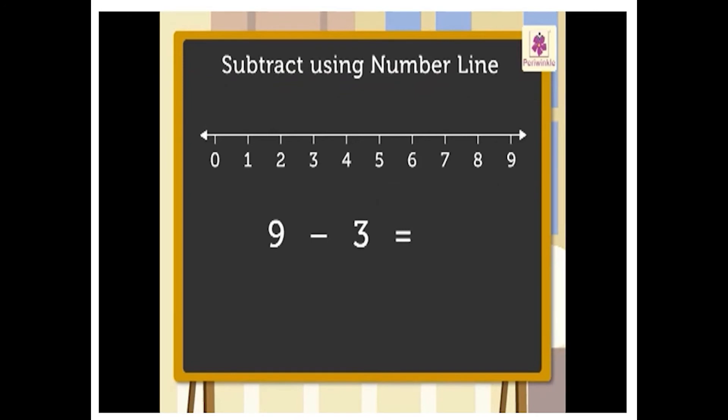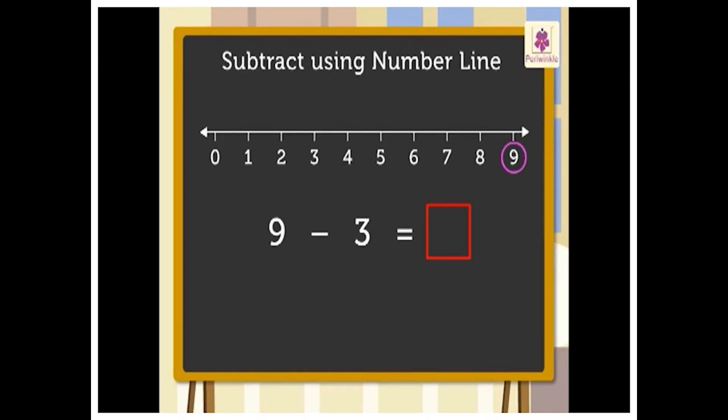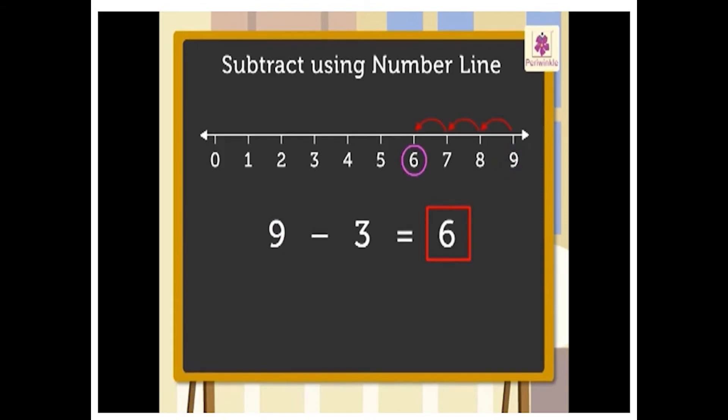Our first question is nine minus three. To subtract three from nine, we have to start from the first number, that is nine, then take three jumps to the left from nine. Put an arrow mark to the left. Now we have reached at number six. So nine minus three is equal to six.